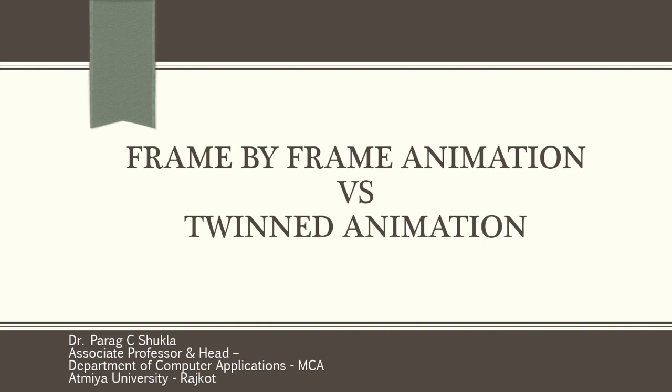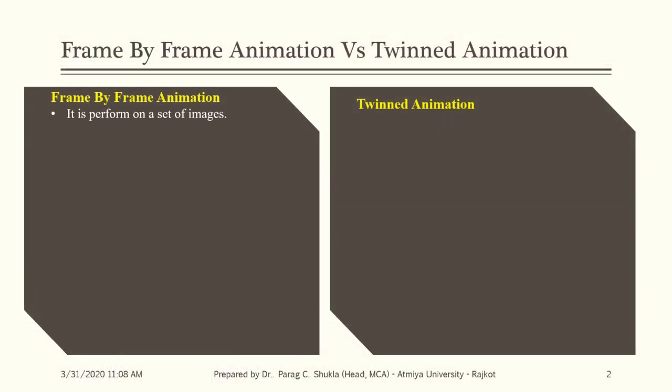Frame-by-frame animation is performed on a set of images — it can work only on images. Tween animation can be performed on simple transformations like spin, move, zoom, and blink. For rotation, a rotate tag is available; for zooming, a scale tag is available; for movement, a translate tag is available; and for blinking, an alpha tag is available.